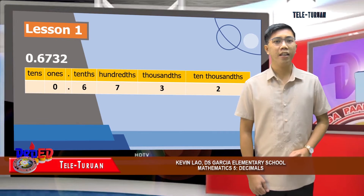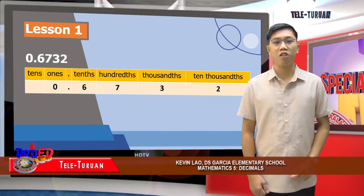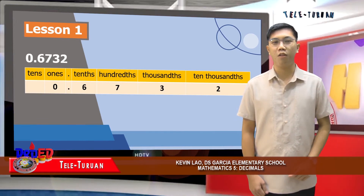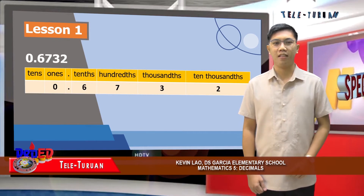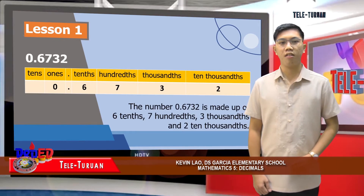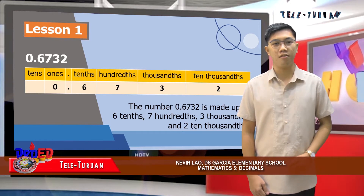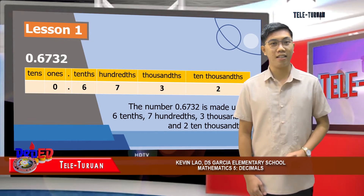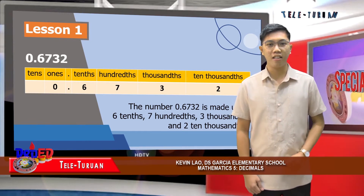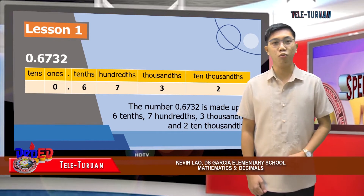Equivalently, the place value to the right is one-tenth of that to the left. In addition, the value of the tenths place is one-tenth the value of the ones place. The number six thousand seven hundred thirty and two ten-thousandths is made up of six tenths, seven hundredths, three thousandths, and two ten-thousandths.